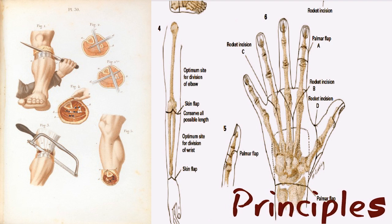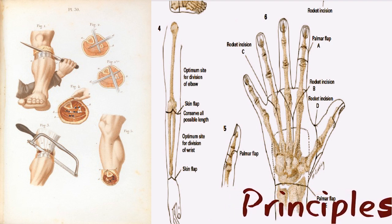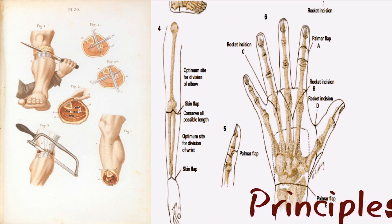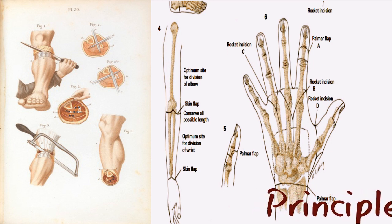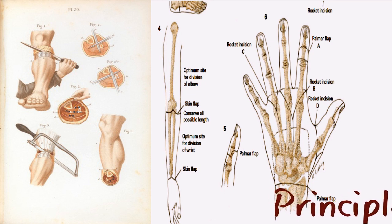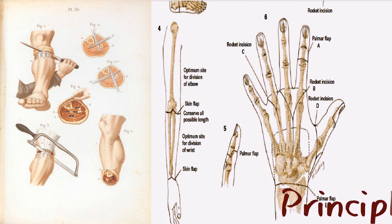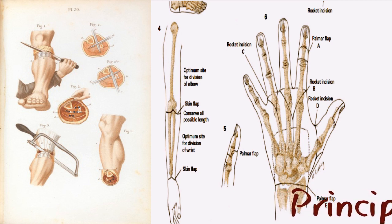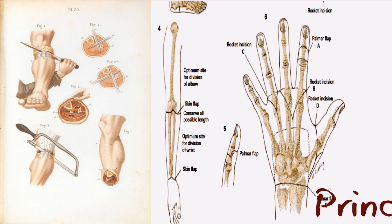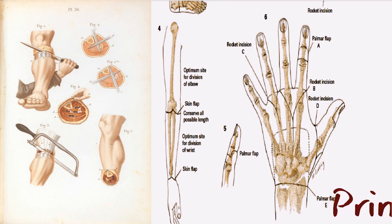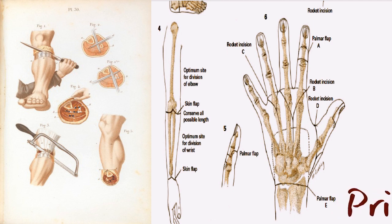As a general rule, it is desirable to have the scar in the posterior of the stump in the upper extremity, since the prosthesis bears largely on the distal surfaces of the stump. The scar for end-bearing stumps of the lower extremity should preferably be posterior to the end of the stump. In minor amputations of the fingers and toes, long palmar and plantar flaps are made to cover the stump with a thick, protective pad of tissue. Racket incisions are advisable for amputations of the toes, since they may be extended upward to permit exposure of the metatarsals.